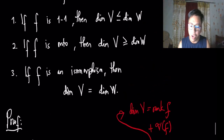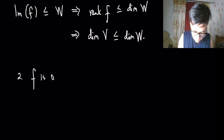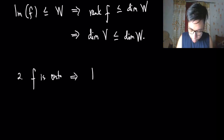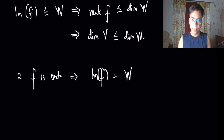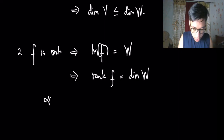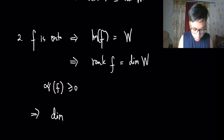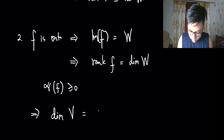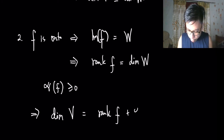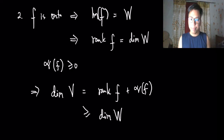Proof of number two: if f is onto, then the image of f equals W, so rank(f) = dim(W). Since nullity(f) ≥ 0 always, by the Rank-Nullity Theorem dim(V) = rank(f) + nullity(f) ≥ rank(f) = dim(W). Therefore dim(V) ≥ dim(W).